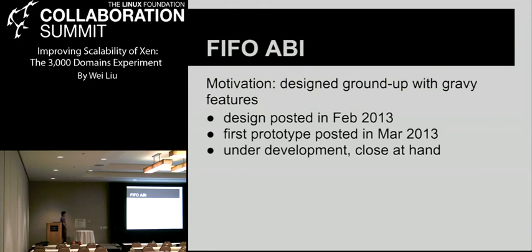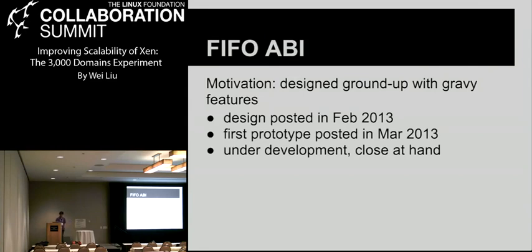The pros for the three-level ABI are that the general concept and race conditions are very well understood and tested, and since it's only for DOM0 and driver domains the memory footprint is not very large. The downside is that this bitmap approach has no event priority — a downside inherited from the two-level design. Then there's the FIFO ABI: the motivation is that since we're designing a new ABI from scratch, why not add great new features? The design draft was posted in February and the first prototype in March; it should be ready by the 4.4 release.